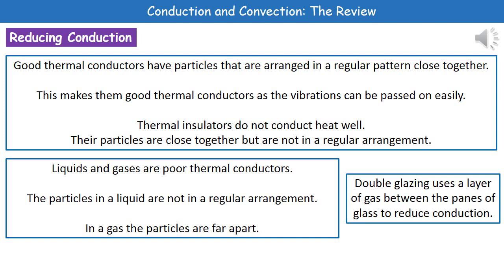That irregular arrangement makes it harder to pass vibrations from one particle to the next. So while solids tend to be quite good thermal conductors, our poor thermal conductors tend to be liquids and gases. That's because we don't have this regular arrangement in liquids, and in gases — as you remember from the particle model — the gas particles are far apart from each other, making it much harder for them to come into contact and pass vibrations.